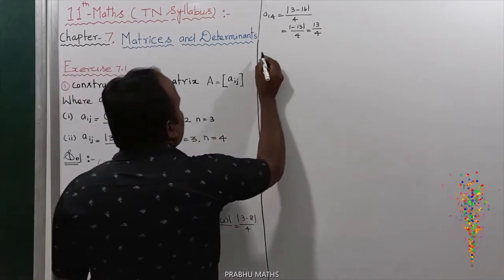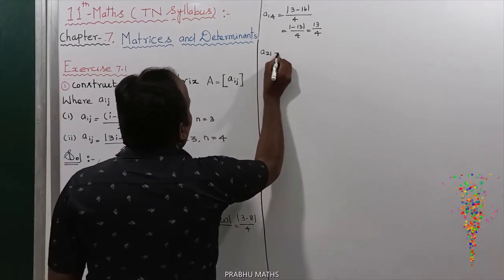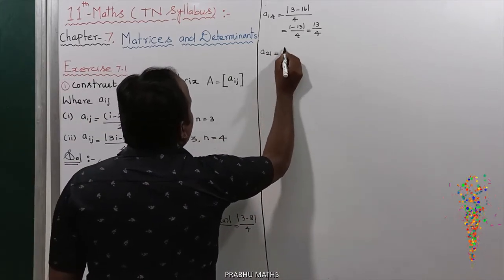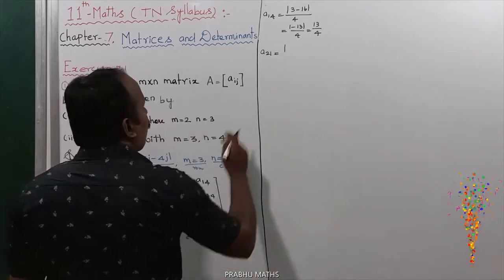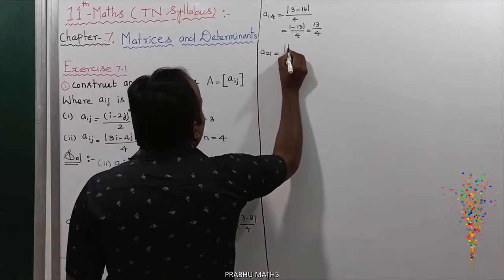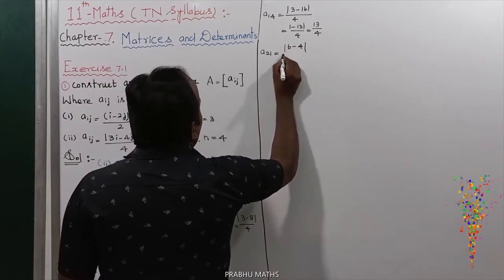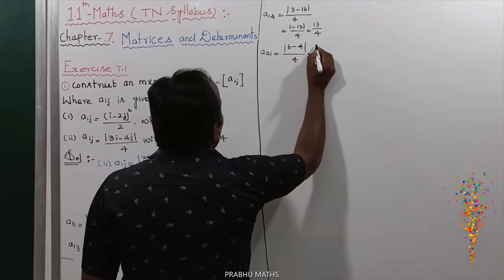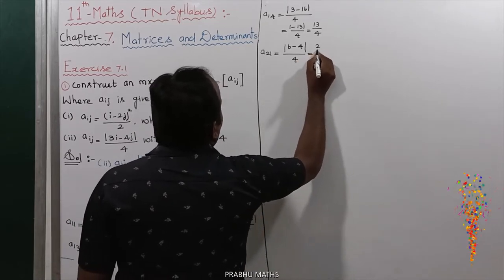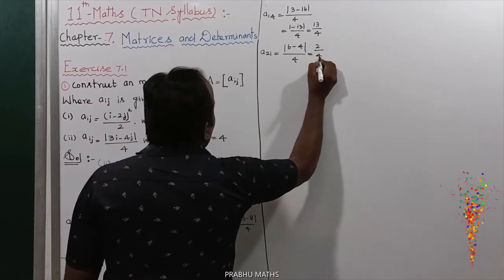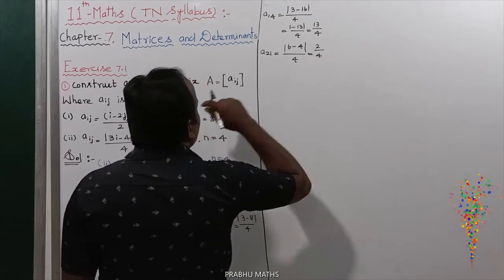Now let us take the second row. A21 equals the modulus of 2 times 3 minus 4 times 1, divided by 4. That is modulus of 6 minus 4, which is 2, divided by 4. So A21 equals 2 by 4.